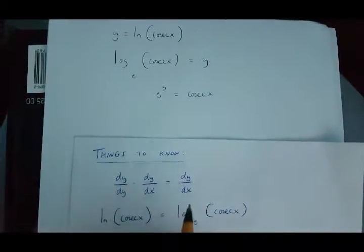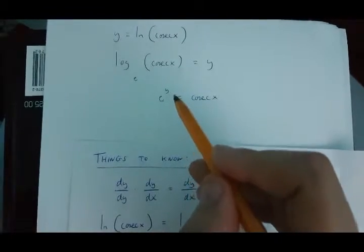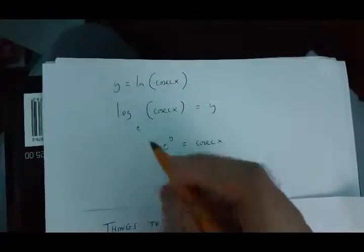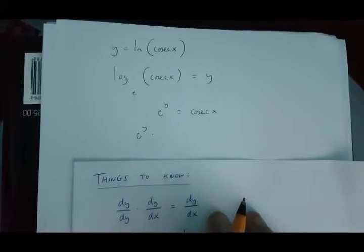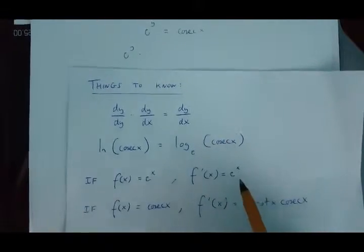Now, it turns out that if we've got e to the power of y, then dy over dy is simply going to be e to the power of y. This is because of this rule over here.